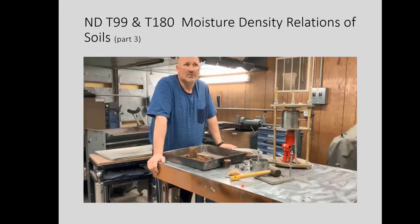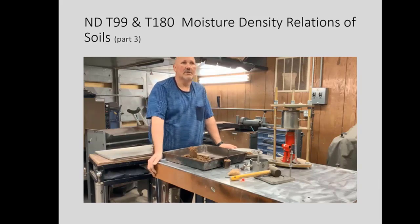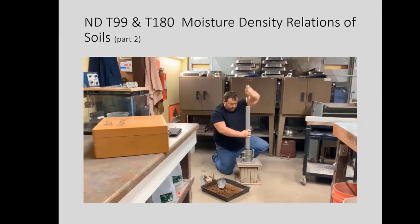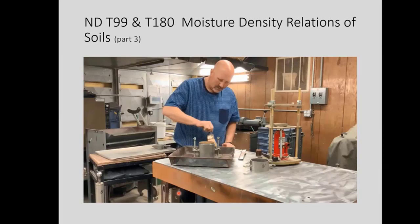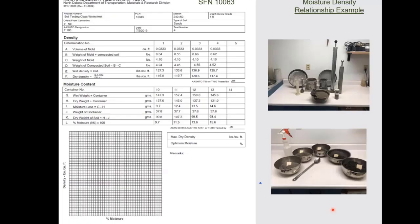To complete a full proctor, you would run three to four more points at different moisture contents to establish a curve. In the video, only two lifts were shown, but for the T180 procedure, there are actually five lifts. After the fifth lift, you want it to be just nicely over the collar so you can easily get a straight edge to level it out. If it ends up being less than that, you really should run the test over.